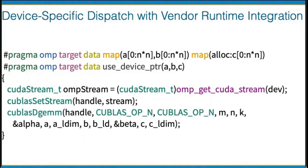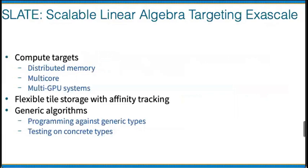We use omp_get_cuda_stream to obtain the CUDA software stack stream, and using that stream we can pass it directly into cuBLAS, which implements matrix multiply through a call to cuBLAS dgemm.